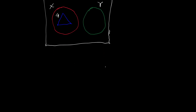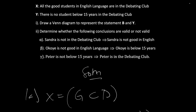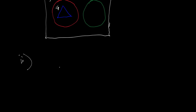Now on Part II, we determine whether the following conclusions are valid or not valid. Alpha: Sandra is not in the debating class implies that Sandra is not good in English. We know that all good students are in the debating class, so if Sandra is good in English she should be in the debating class. Therefore if Sandra is not in the debating class, it means Sandra is not good in English. So alpha is valid.